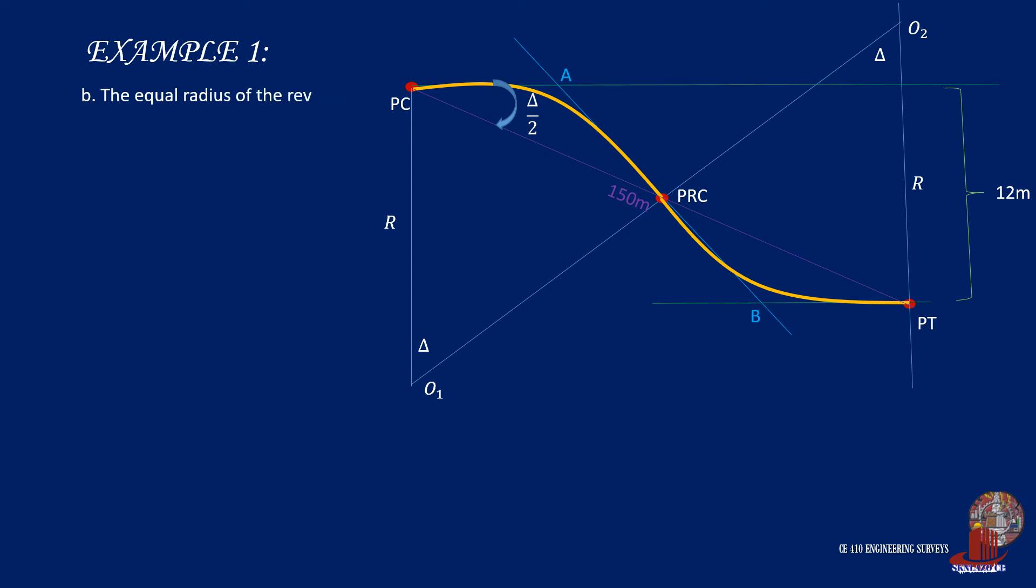For the equal radius of the reverse curve, since AB has already been solved, this length is equally divided as tangents of the two curves as both have equal radii. The tangent is a function of the radius, so by plugging in the angle delta, we can take the radius of the reverse curve as 468.7583 meters.